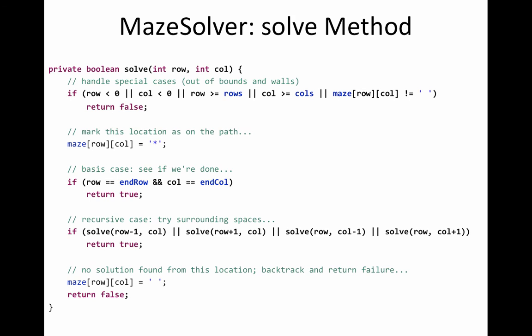We will check the base cases, the happy case, if we are done. And then, if this is not the end of the maze, we are going to try the surrounding spaces, all of our neighbors. If one of them returns true, then our method is going to return true and we will all be happy. Otherwise, we are going to unmark this location. We are going to backtrack, so this is not a location through which we can go to the end of the maze, and we will also return false so that this location, this path, is not followed.